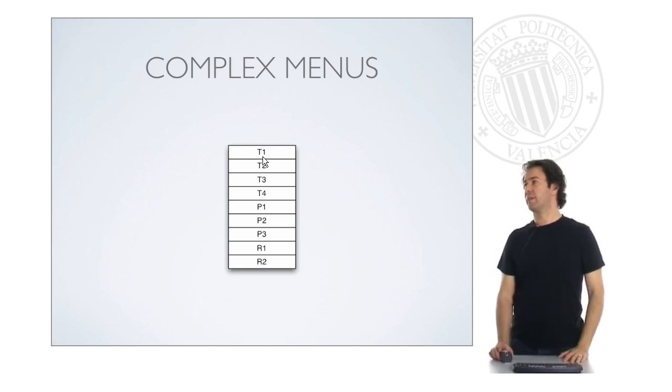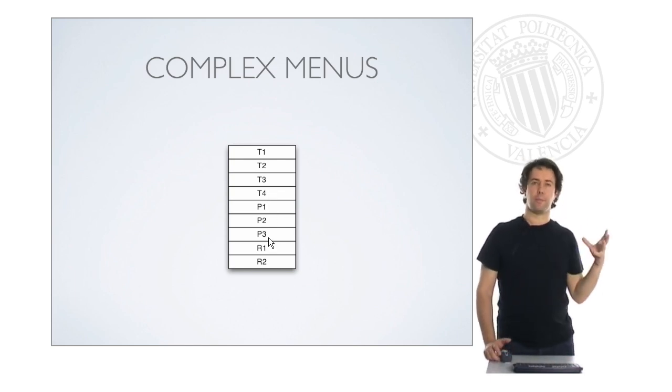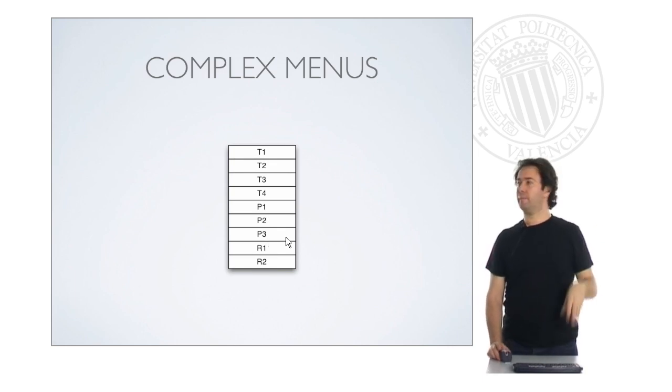For example, in this example, you have T1, T2, T3, T4. These four elements have some relationship somehow. Then we have P1, P2, P3 that have also some relationship between them. And then we have R1, R2.